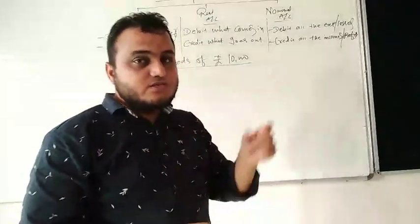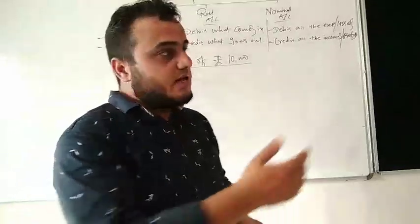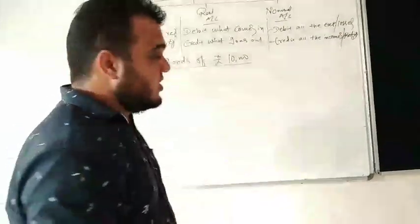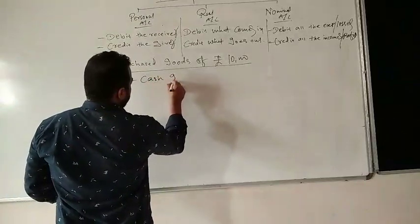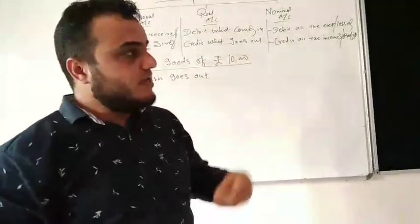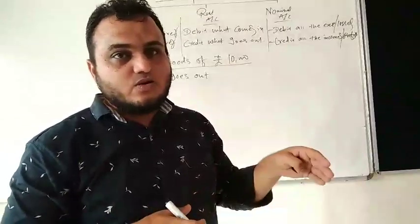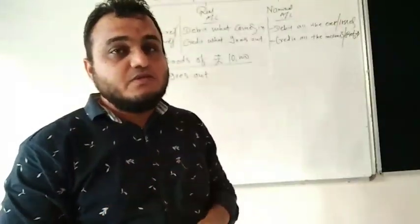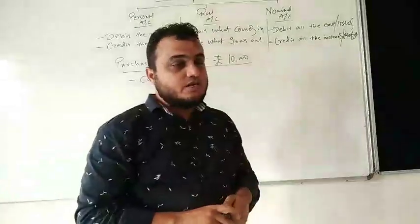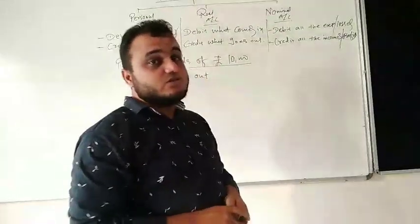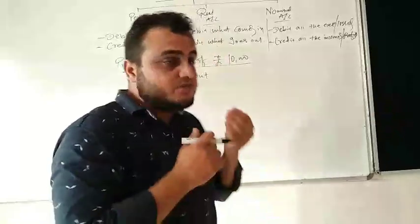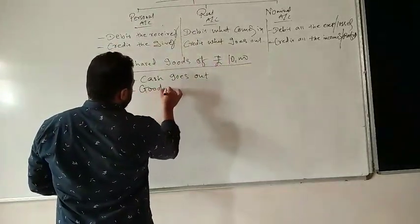Since it's a cash transaction, either cash will come in or cash will go out — both cannot happen at the same time. When you purchase goods, goods come in, which means cash goes out. So I write: cash goes out. Next, check whether goods or assets come in or go out. Since it's a purchase, goods come in — so I write: goods comes in.